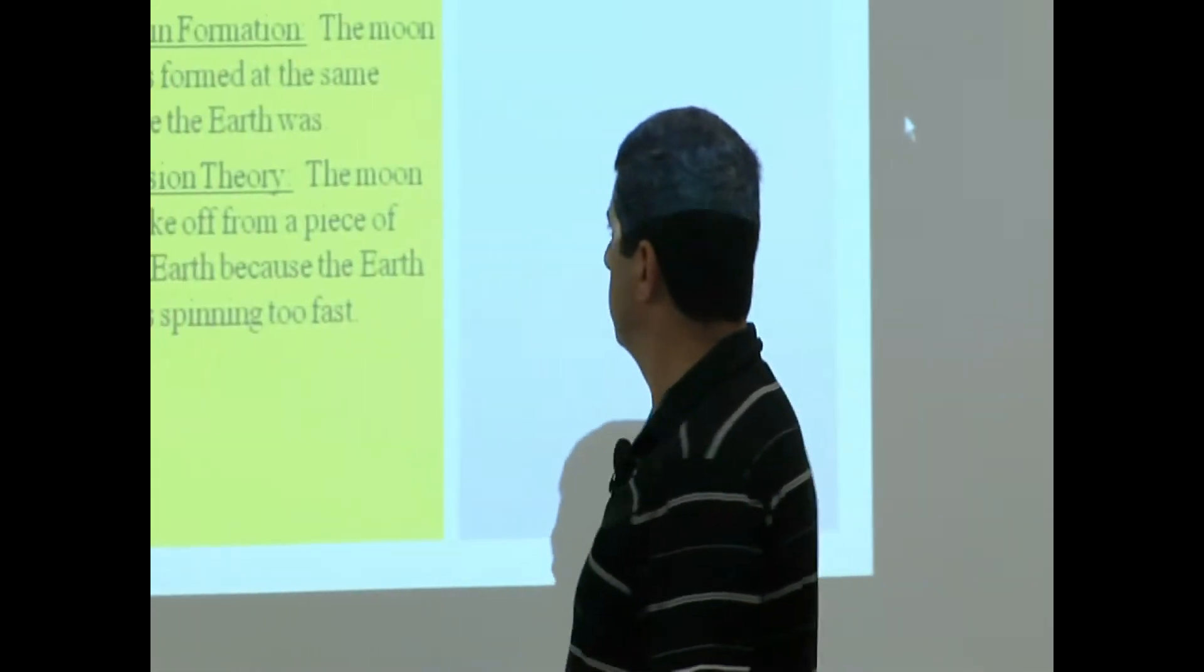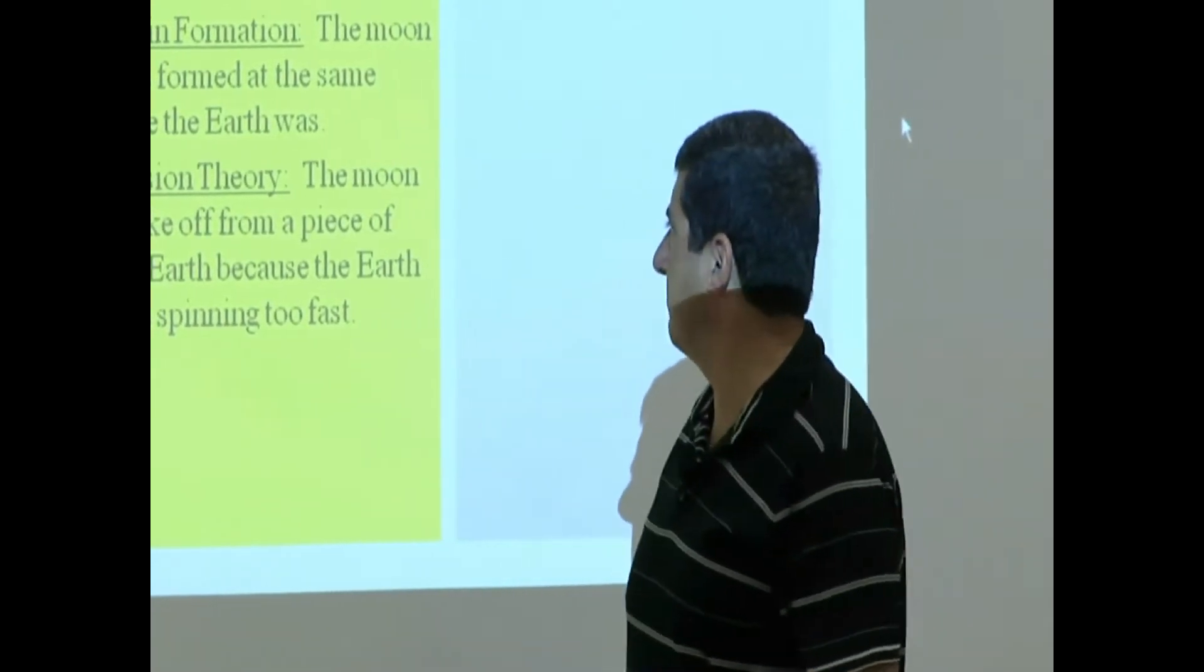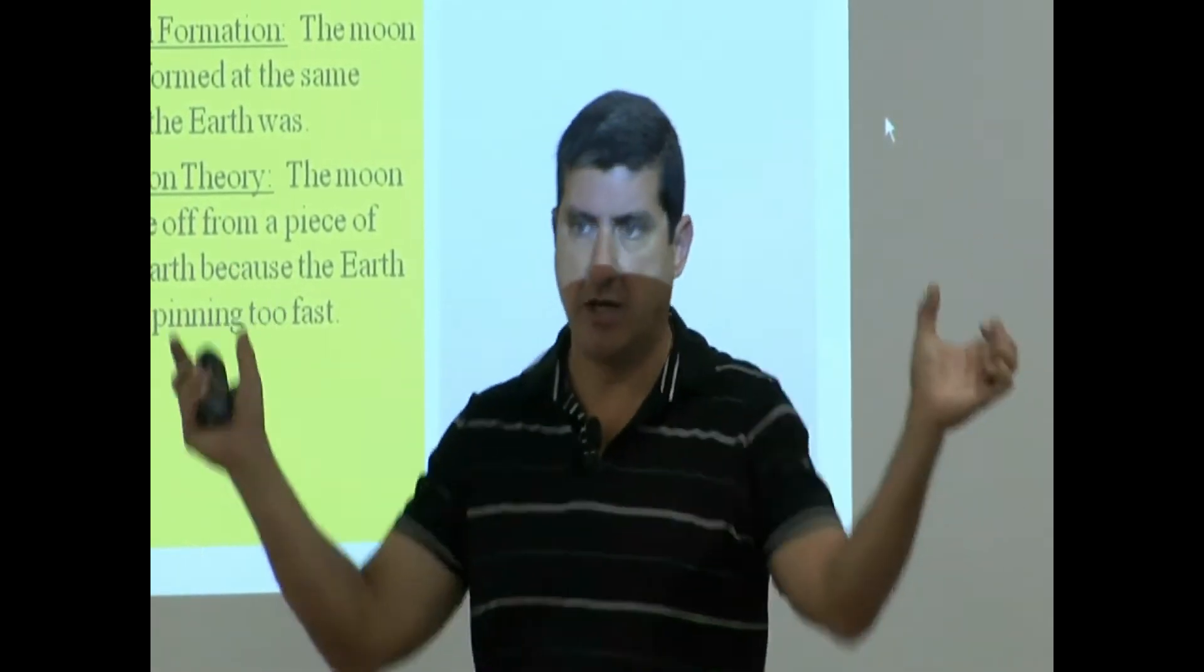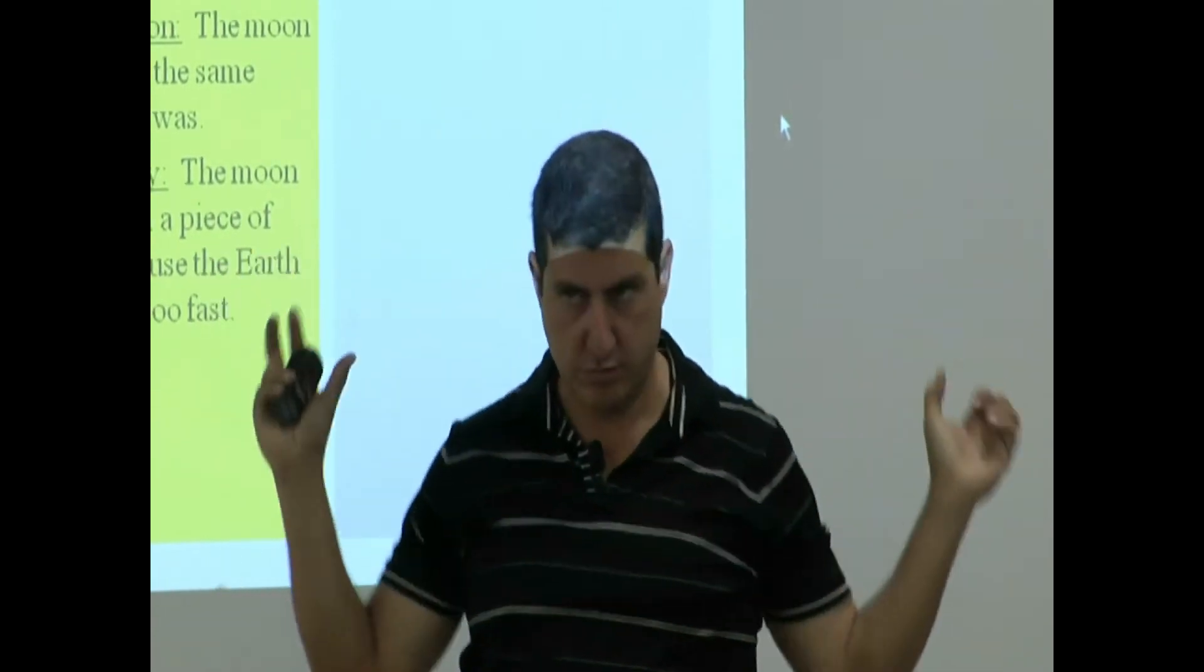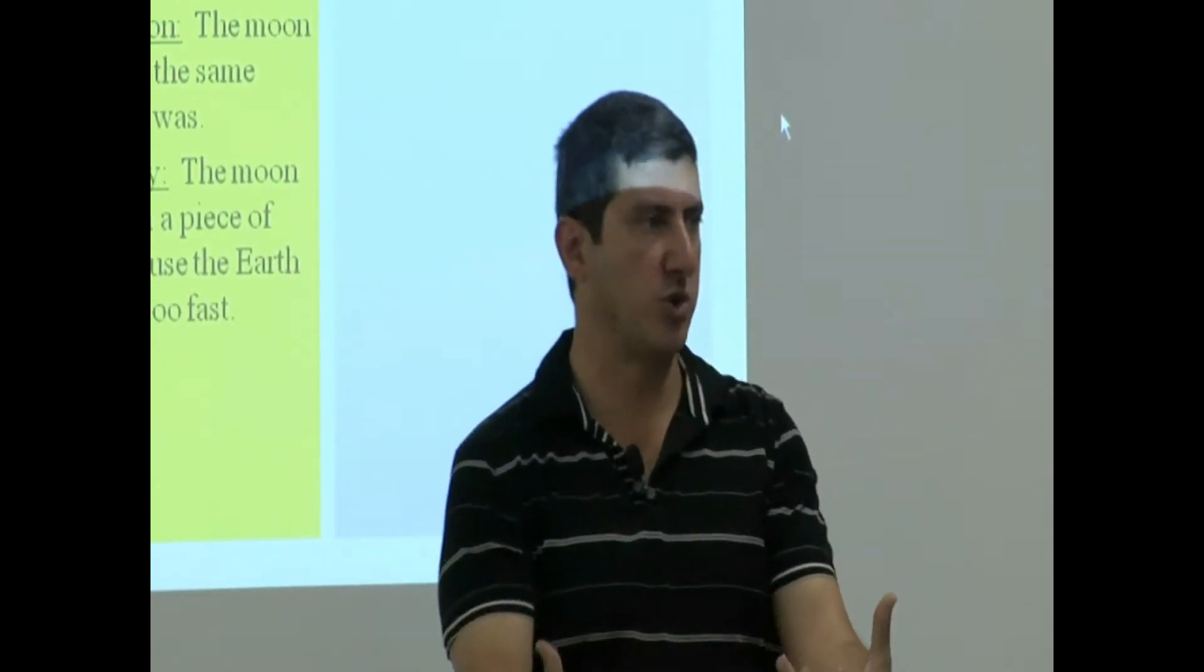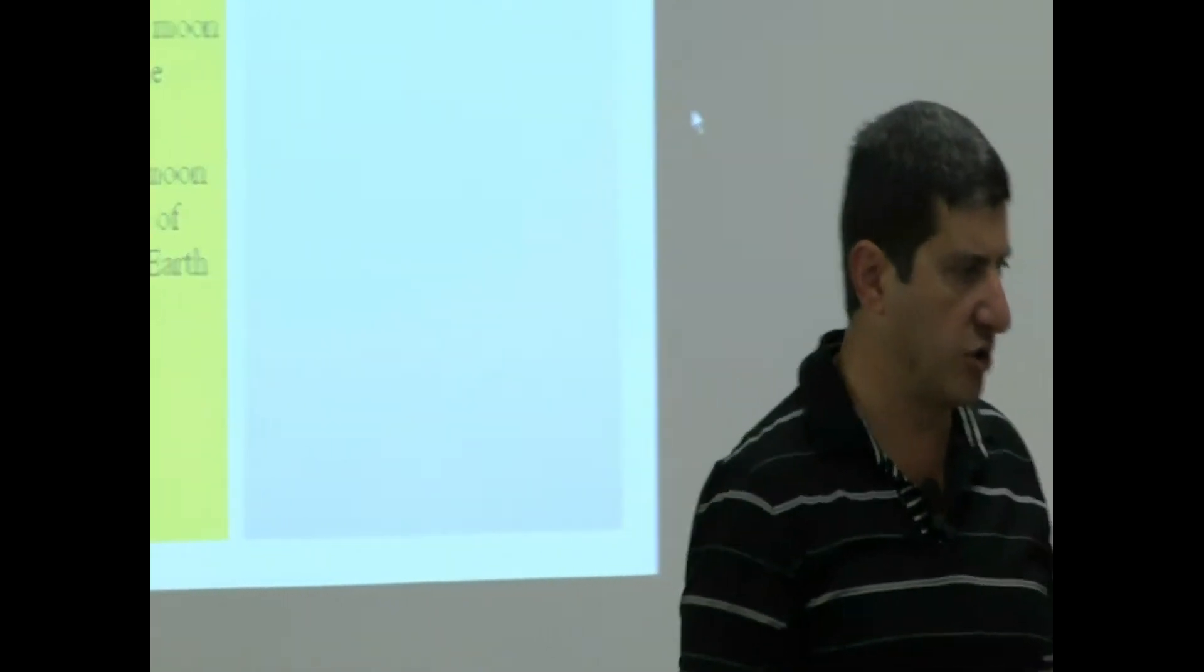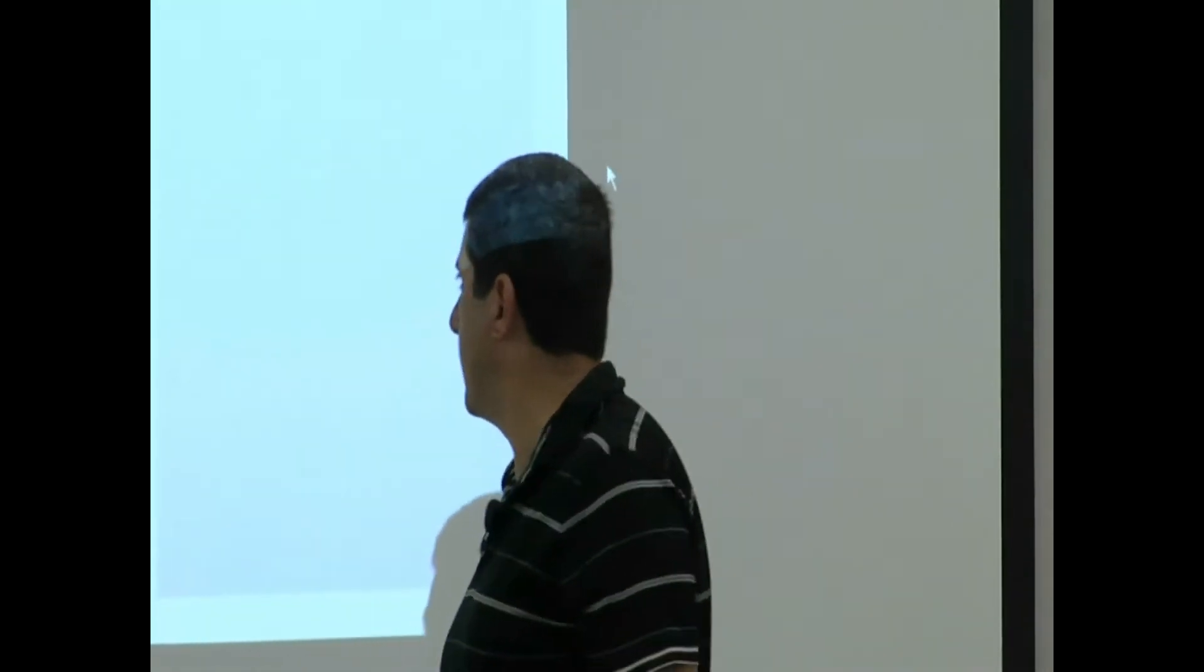Twin formation. The moon was formed at the same time the Earth was. They were somehow formed when the whole solar system was formed. Sounds good, but it doesn't explain all of the facts about the moon. About its surface features, about its density, and everything like that.